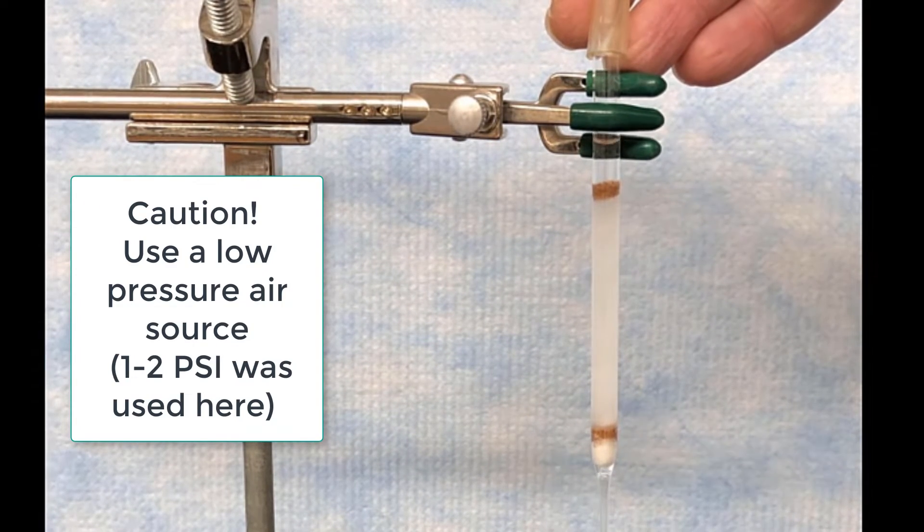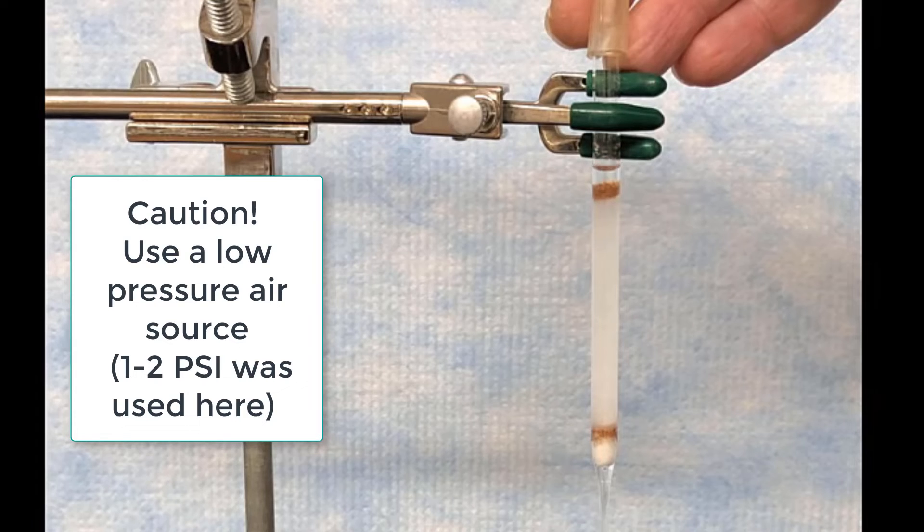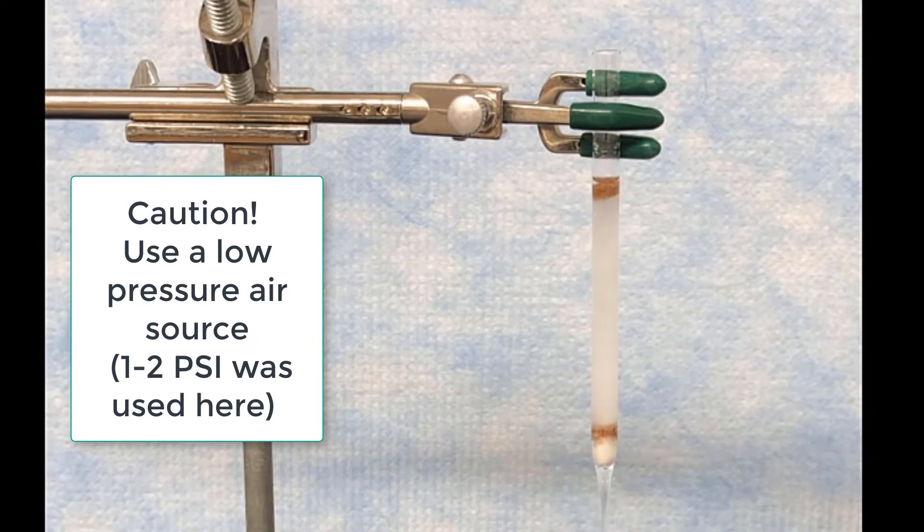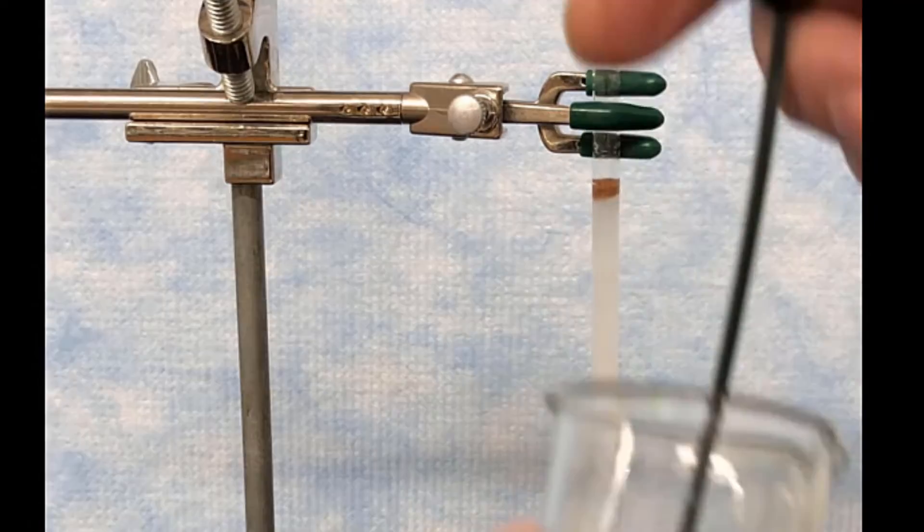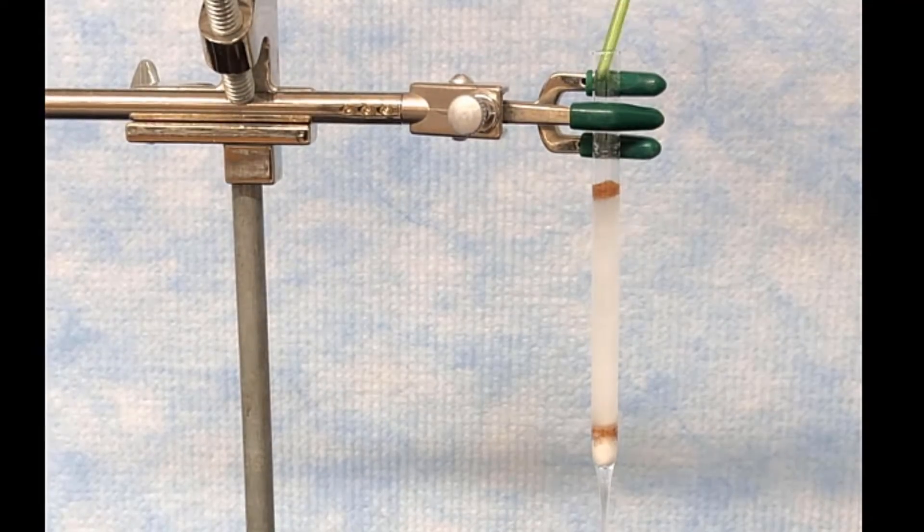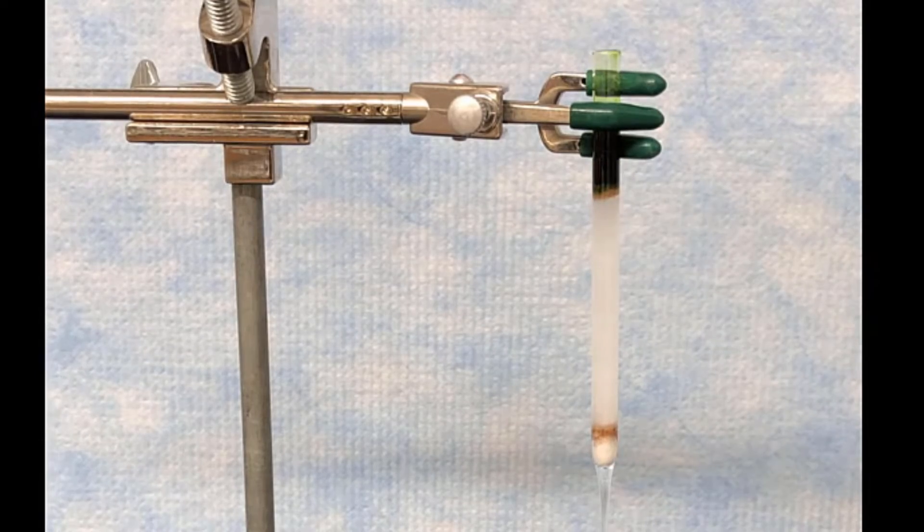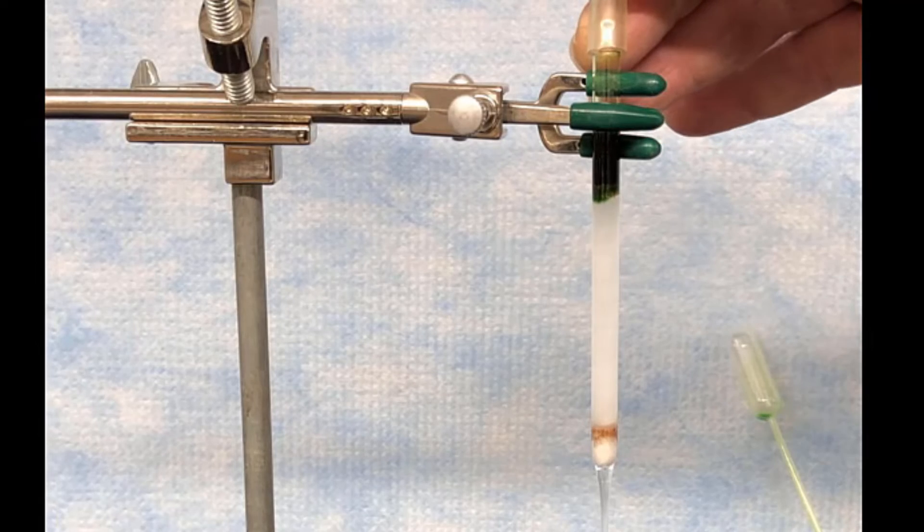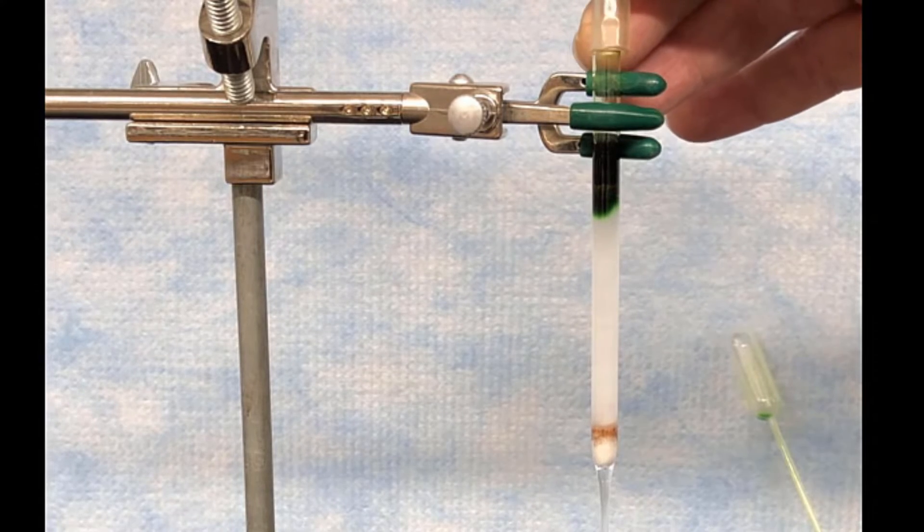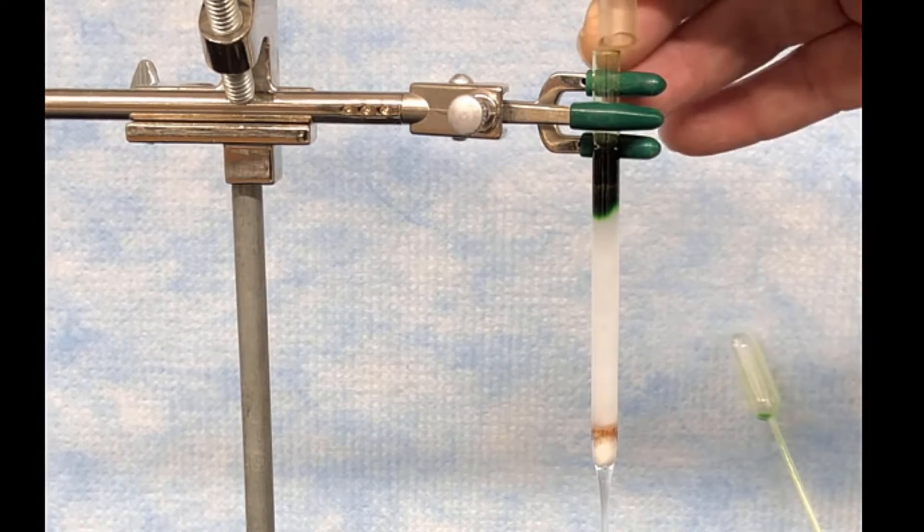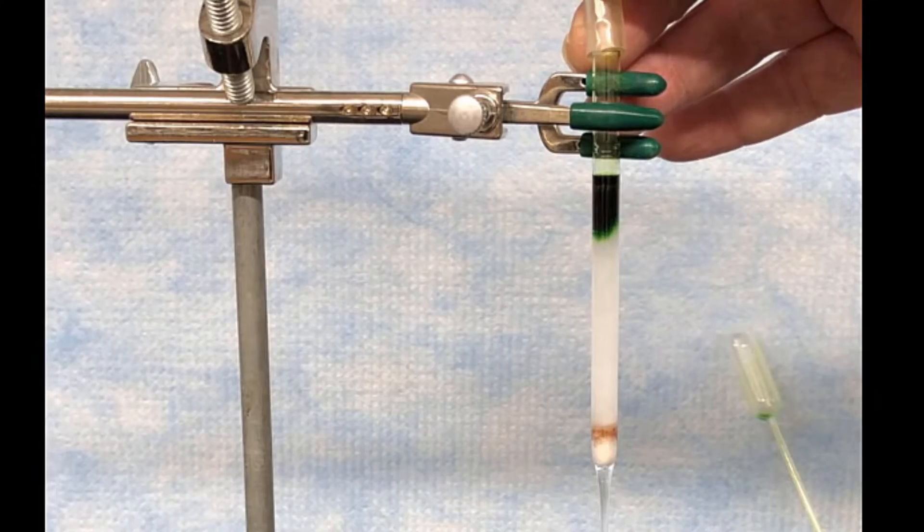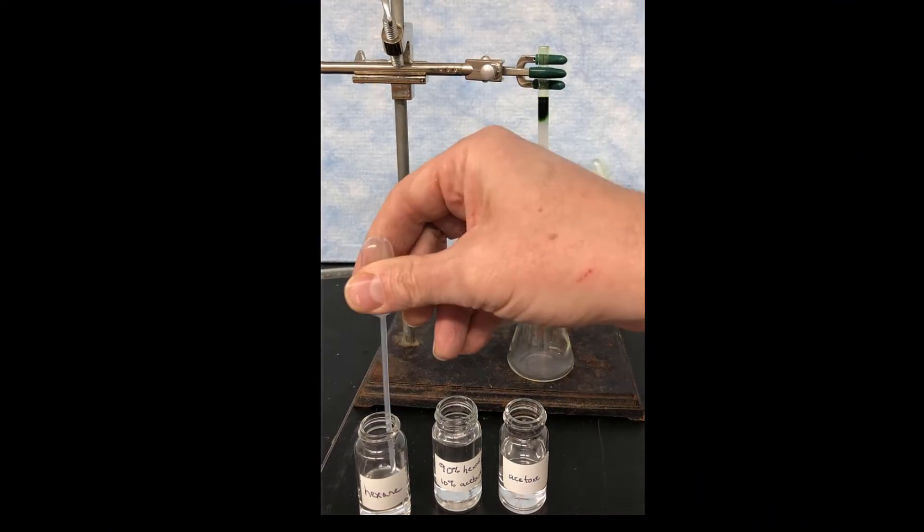But first, we need to remove some of that hexane. So this is using a gentle pressure of air, very, very gentle, to try to get rid of some of that solvent. You do have to be really careful with compressed air. You don't want to use too much pressure. You could blow up the column. So here we're putting on the crude pigment solution, and we're going to just give it a gentle push with the compressed air to push it along. We don't want to push it too far because you don't want to dry out the column.